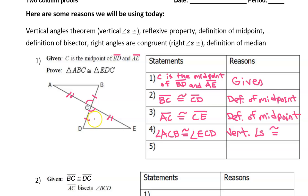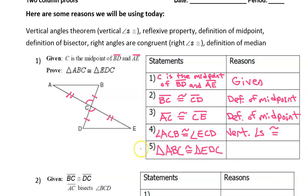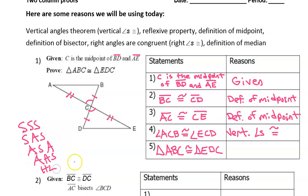So that's enough information to prove that the triangles are congruent. We can now say triangle ABC is congruent to triangle EDC. For the reason, when we are saying that a triangle is congruent to the other triangle, the reasons will be things like side-side-side, side-side-angle, side-angle-side, angle-side-angle, angle-angle-side, or hypotenuse-leg. These are the types of things we are looking for in terms of reasons.